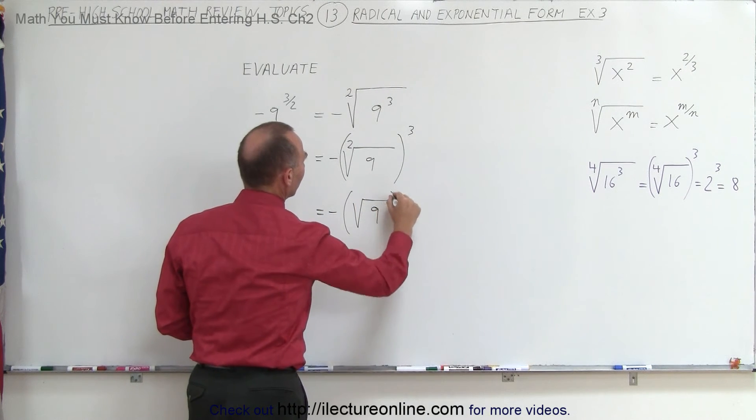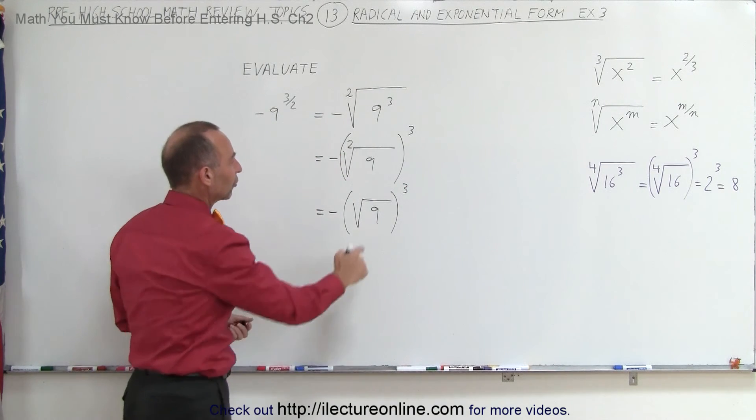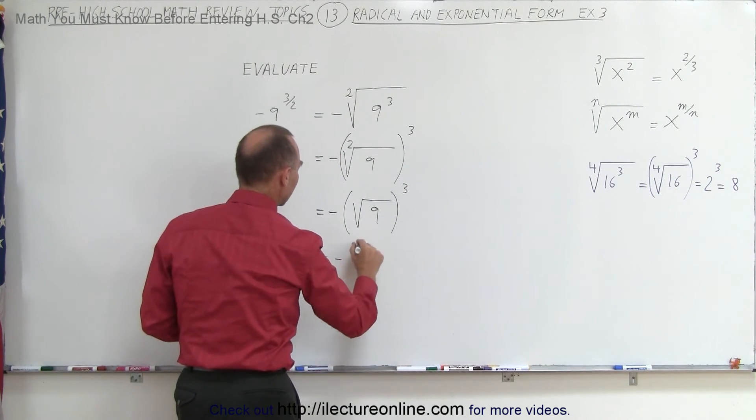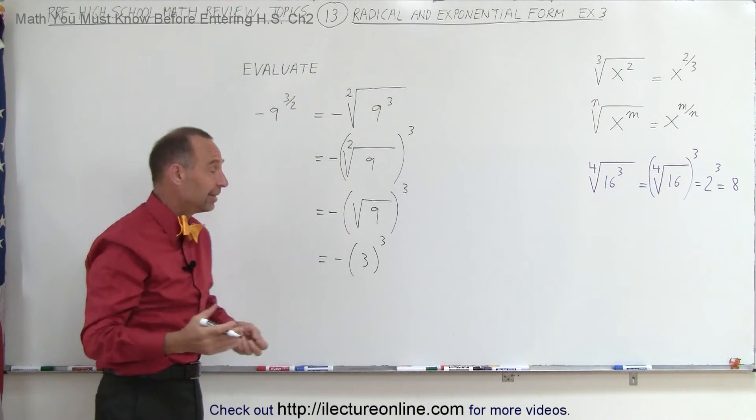Without the 2 there, simply the square root of 3, and now what we can do is take the square root of that, so this is equal to the negative of 3 quantity cubed, because the square root of 9 is indeed 3.